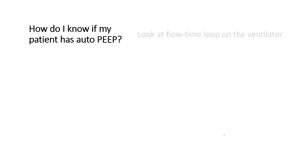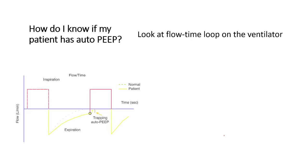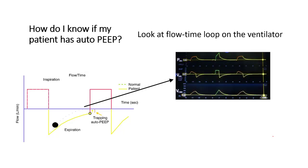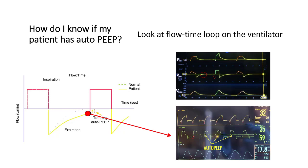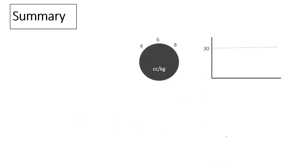To detect auto-PEEP, look at the flow-time loop. If flow comes down to zero, the patient is not developing auto-PEEP. If flow does not reach zero before the onset of the next inspiration, some air is trapped causing auto-PEEP.